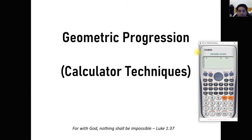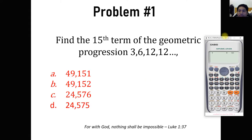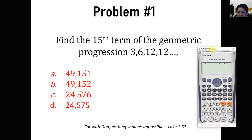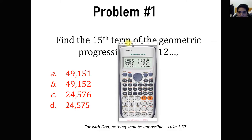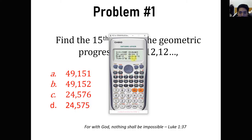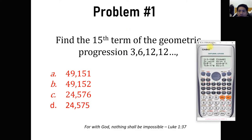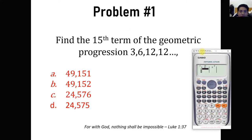Today we're going to talk about geometric progression calculator techniques. Last time we discussed arithmetic progression, but now we're moving to geometric progression. We'll be using MODE STAT, and we're going to choose the 'a multiplied by b raised to x' option, which is for geometric progression.